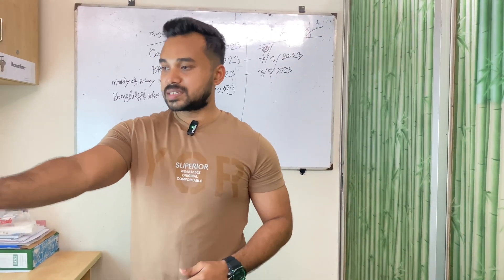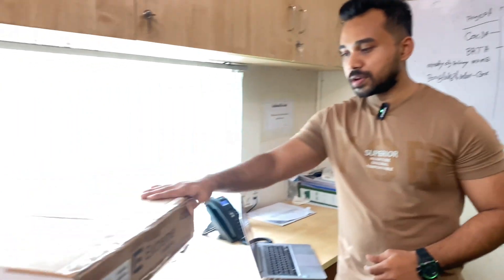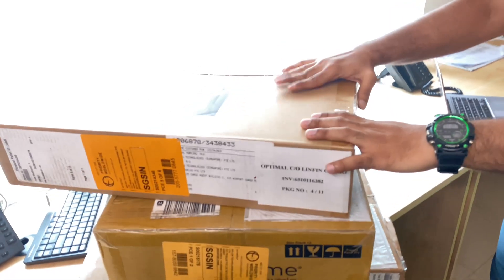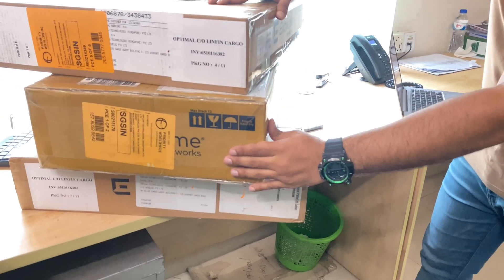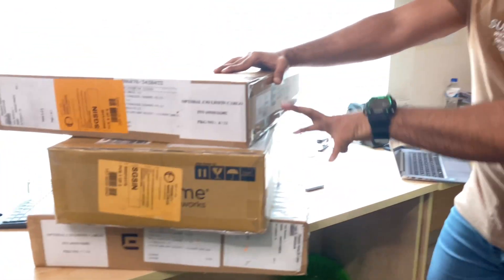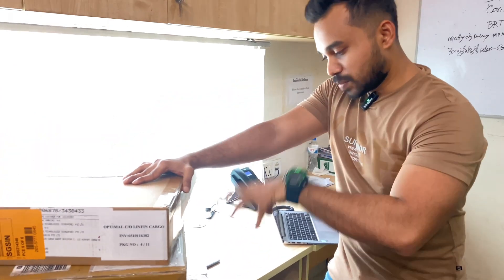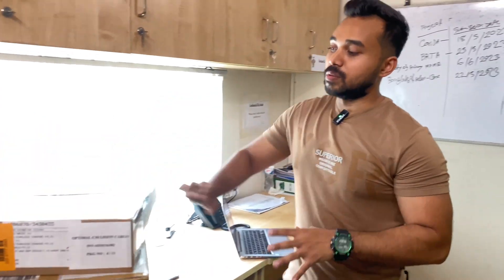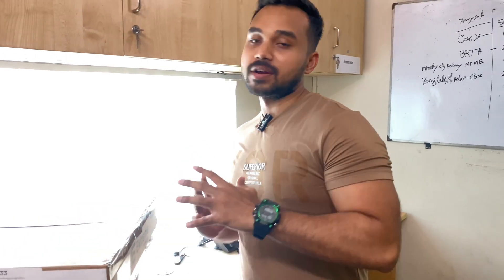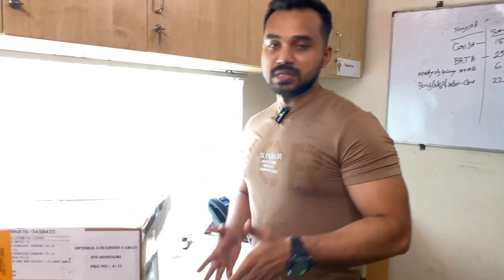I would request my engineer to show the Extreme switches we are going to deploy. We have one of the access switches from Extreme — we have six units of this — and this one is the core switch, and this one is the distribution switch. So we have one access, one distribution, and one core. We are going to unbox all the switches and later deploy them into our environment.